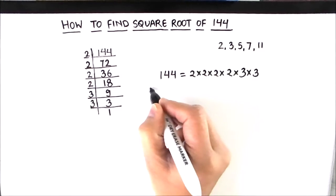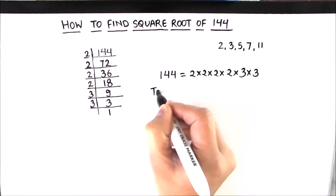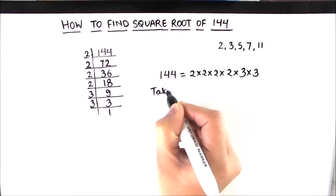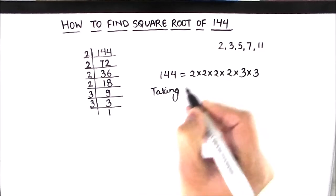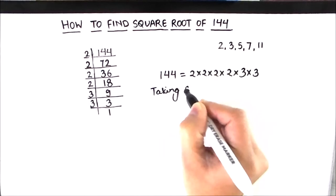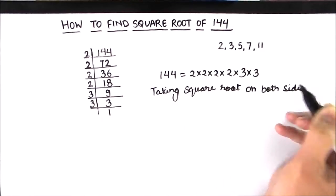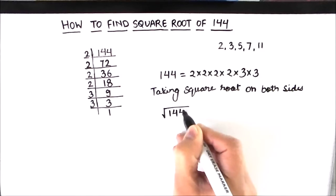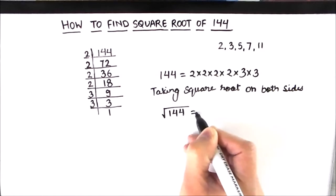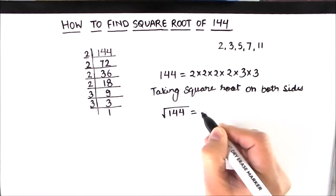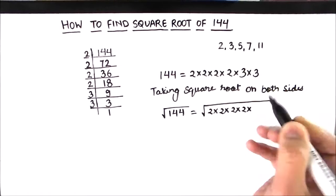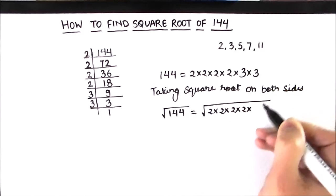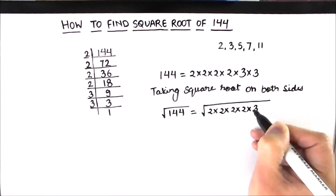So taking square root on both sides. Square root of 144 is equal to the square root of all these factors.